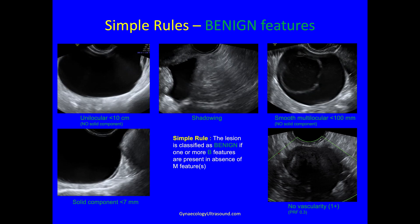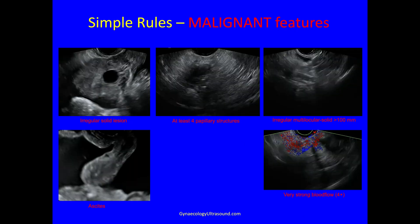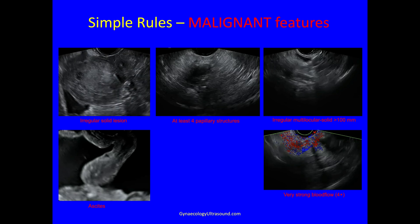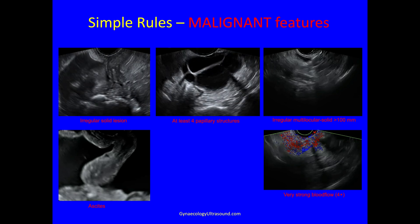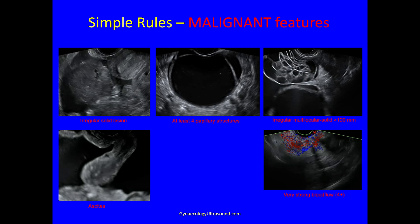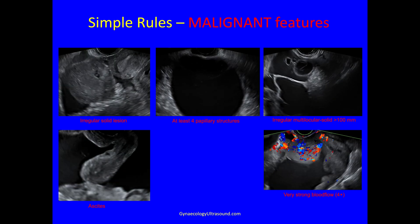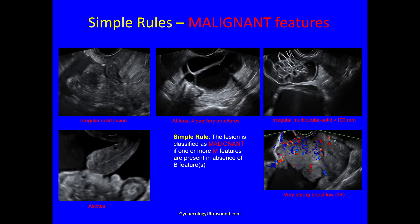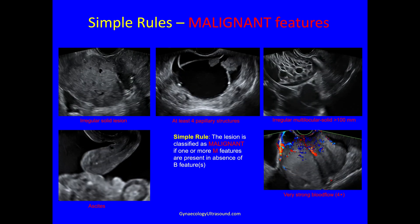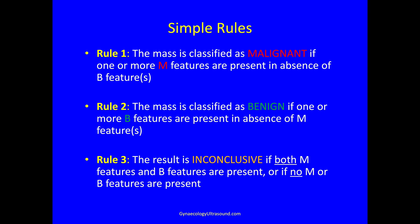A lesion is categorised as benign if there are one or more benign features and no malignant features. Malignant features include: an irregular solid lesion; at least four papillary structures; irregular multilocular lesion with solid component greater than 10 centimetres; ascites; and very strong blood flow. The lesion is classified as malignant if there are one or more malignant features in the absence of benign features. The result is inconclusive if you have both malignant and benign features, or neither.